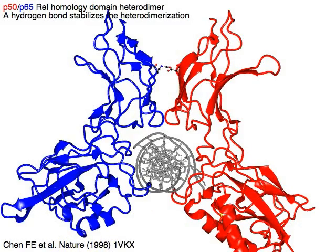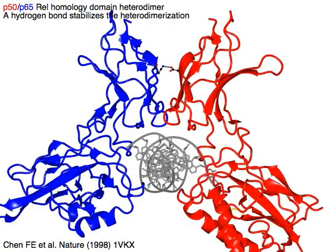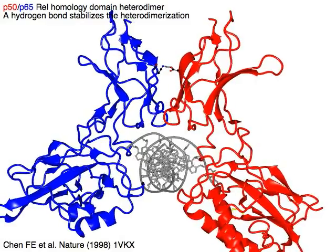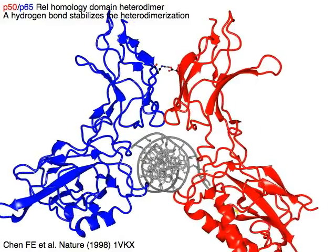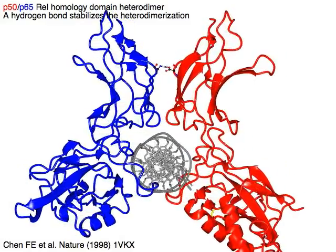In red P50, blue P65 rel homology domain heterodimer, a hydrogen bond stabilizes heterodimerization.